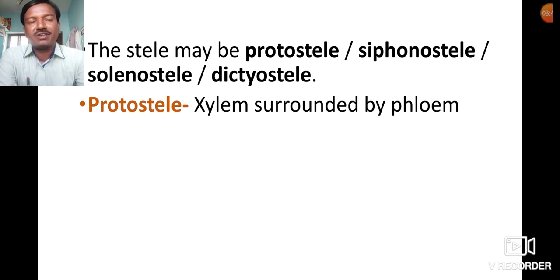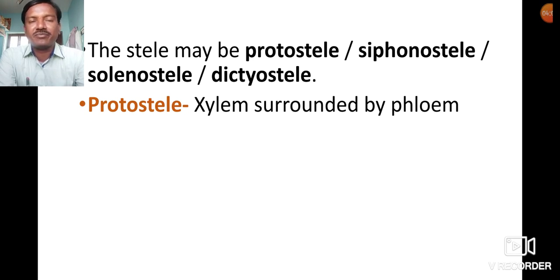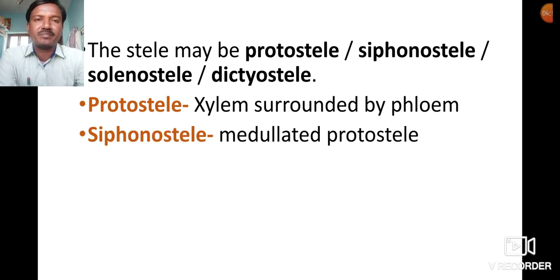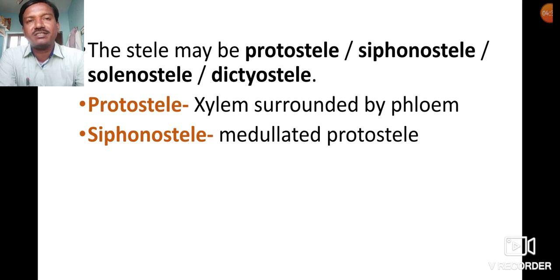Protostele means xylem is present at the center surrounded by phloem — the core part is xylem surrounded by phloem. Siphonostele is a medullated protostele, meaning medulla is present at the center. This type of stele where medulla is present is called siphonostele.